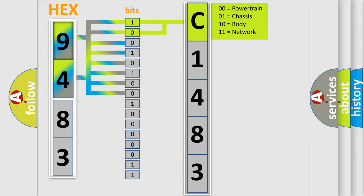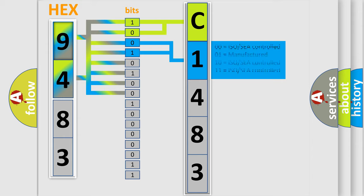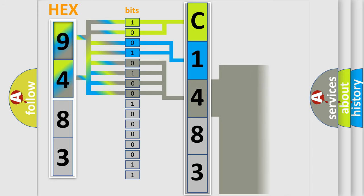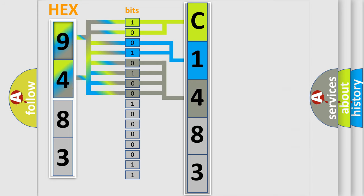By combining the first two bits, the basic character of the error code is expressed. The next two bits again determine the second character. The last bit styles of the first byte define the third character of the code.